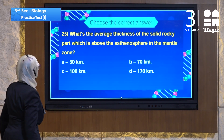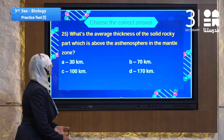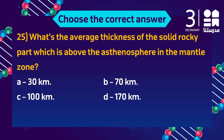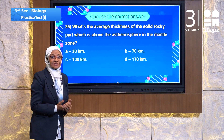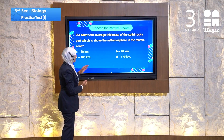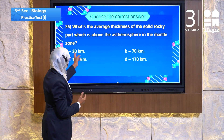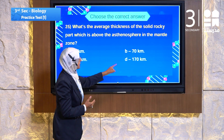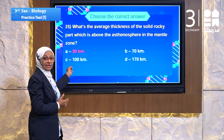Question 25 speaks about earth science - the solid rocky layer. The question asks: what is the average thickness of the solid rocky parts which is above the asthenosphere in the mantle zone? The choices are: A) 30 kilometers, B) 70 kilometers, C) 100 kilometers, D) 170 kilometers. The answer is A - 30 kilometers only.